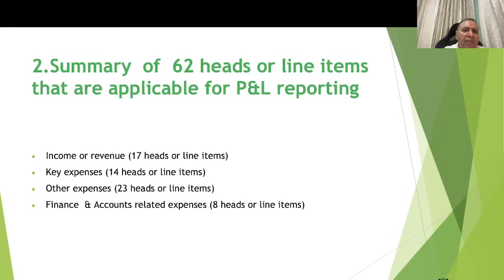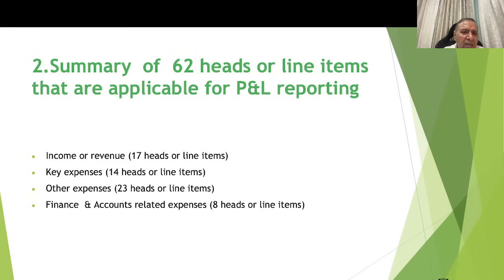A summary of 62 heads or line items applicable for P&L reporting, broadly under four categories: income or revenue — 17 heads (to be covered in detail subsequently); key expenses — 14 heads; other expenses — 23 heads; and finance and accounts related expenses — 8 heads.